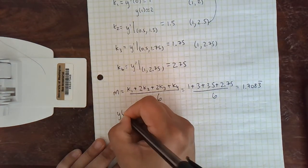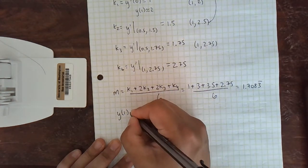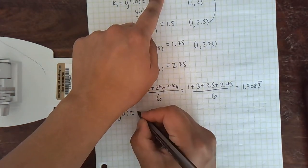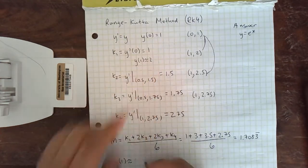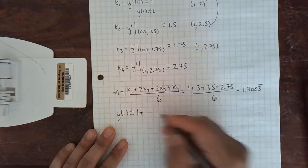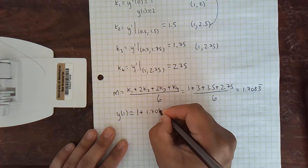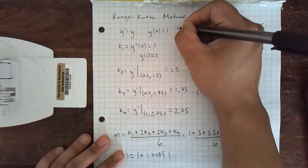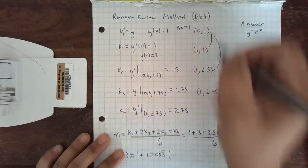So with this RK4 method, I get y(1) is approximately... I'm going to start at y(0). y(0) is 1. Start at y(0) and add this slope over... I'm still using delta x equals 1.